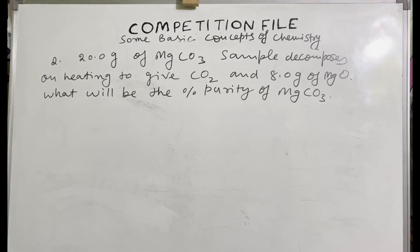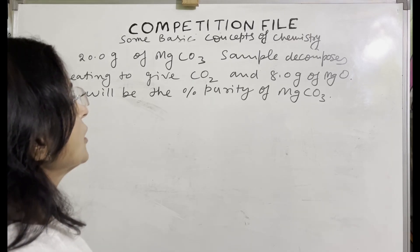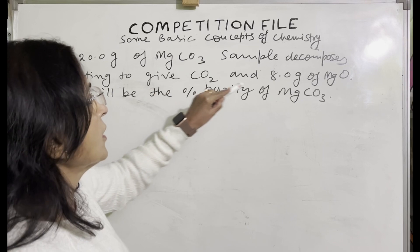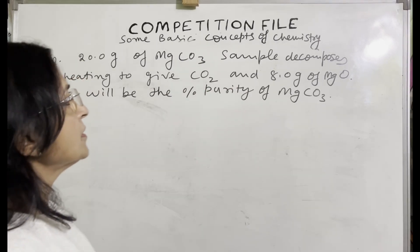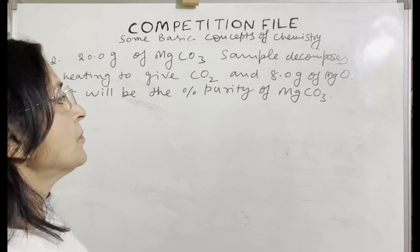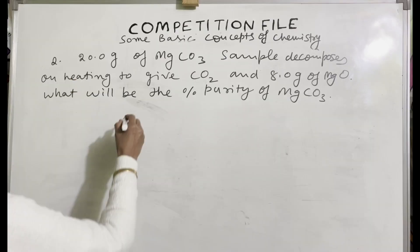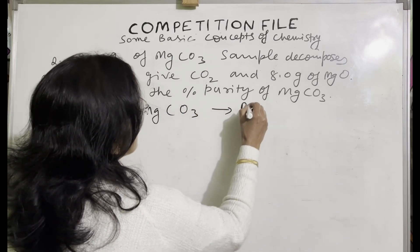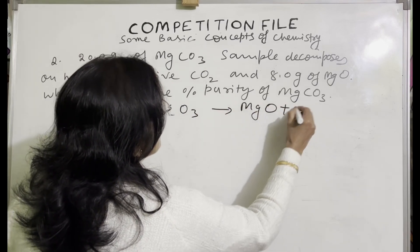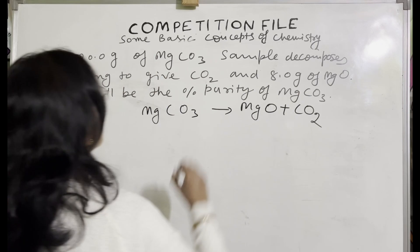Next problem is: 20 grams of magnesium carbonate sample decomposes on heating to give carbon dioxide and 8 grams of magnesium oxide. What will be the percentage purity of magnesium carbonate? First you will write the equation. It decomposes to give magnesium oxide and carbon dioxide.